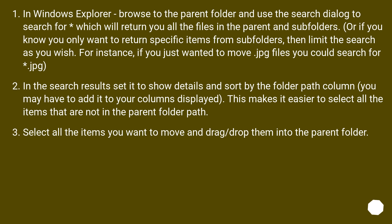In Windows Explorer, browse to the parent folder and use the search dialog to search, which will return all the files in the parent and subfolders. Or, if you only want specific items, limit the search — for instance, search for .jpg to move only JPG files. In the search results, set it to show details and sort by the folder path column (you may need to add it to your displayed columns). This makes it easier to select all items not in the parent folder path.